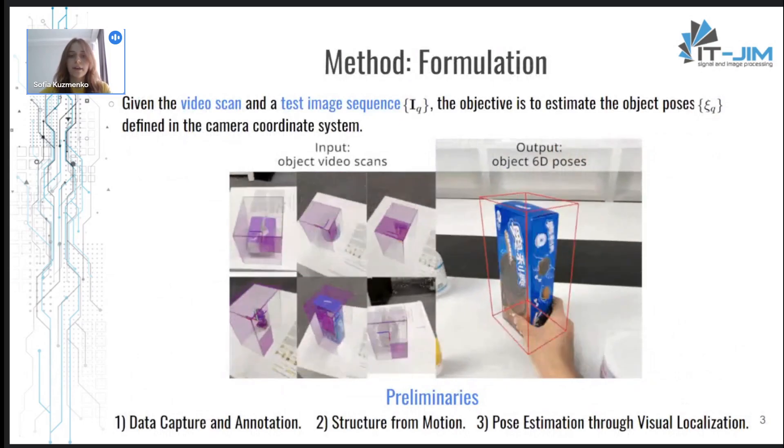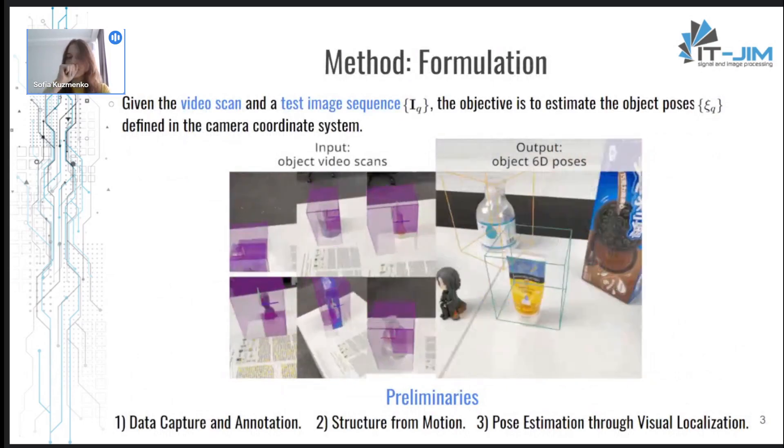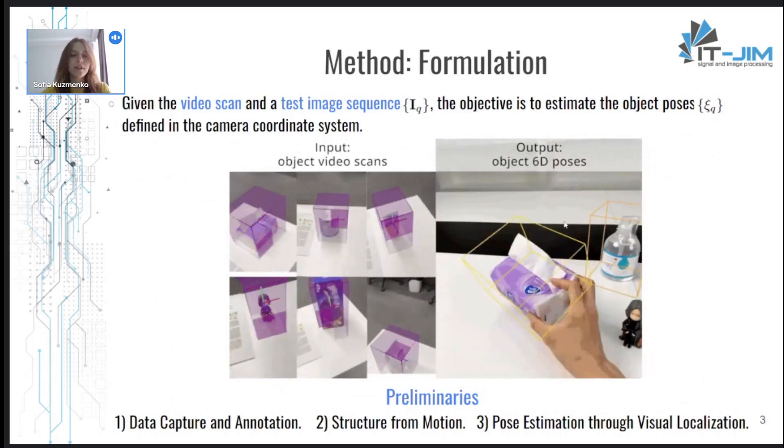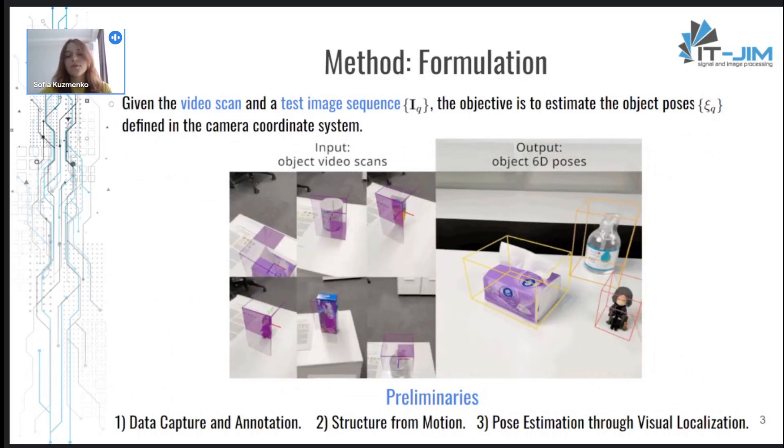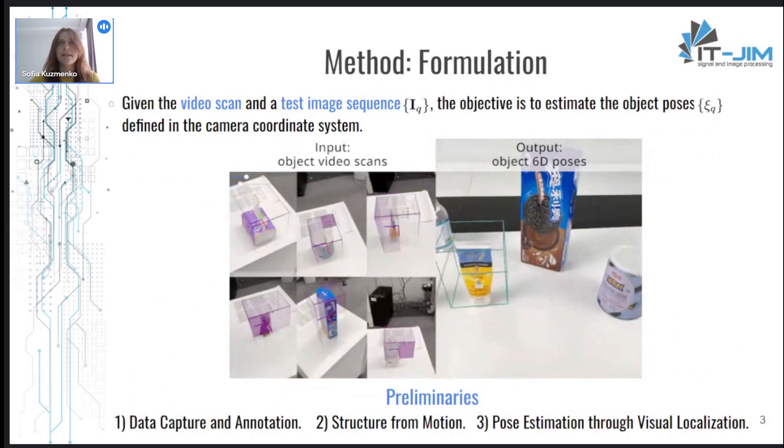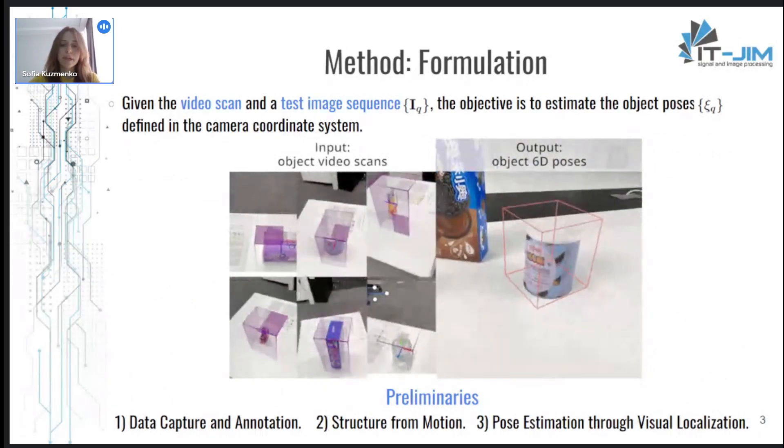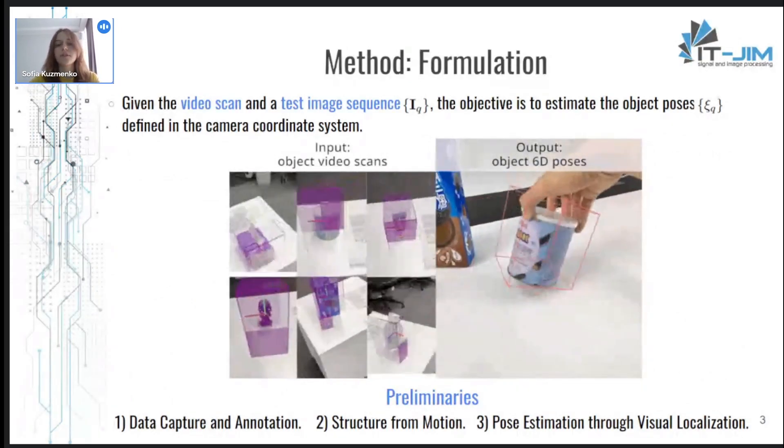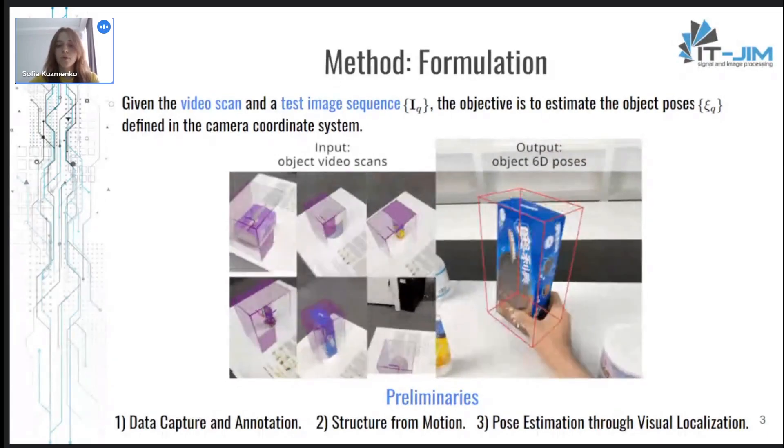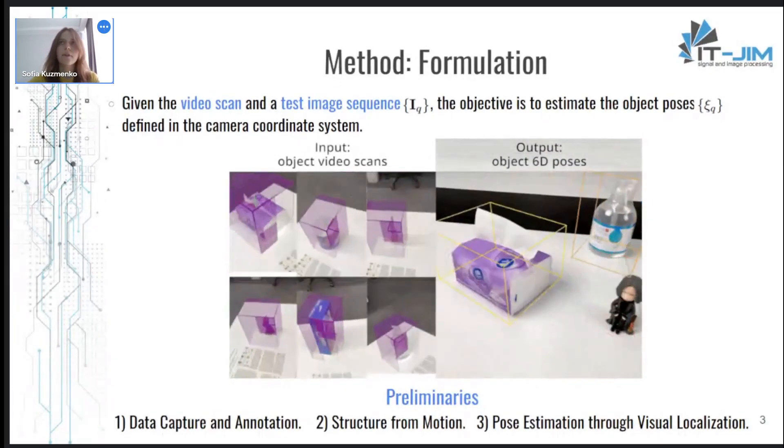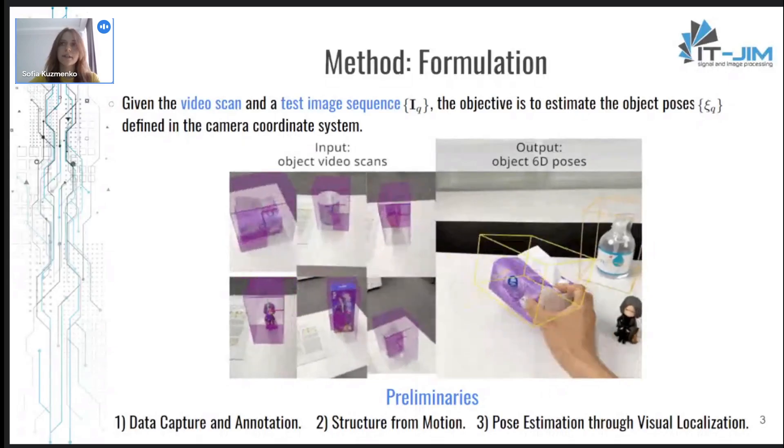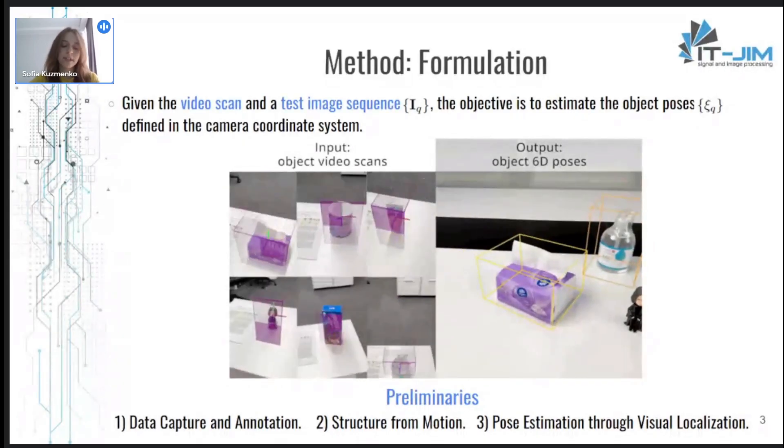Okay, let's dive into the proposed method. The authors formulate the task as one-shot object pose estimation where the objective is to estimate 6D pose of any object given only a few annotated pose annotated images.